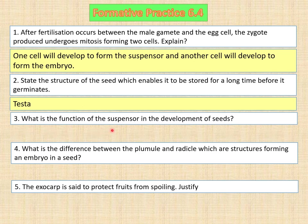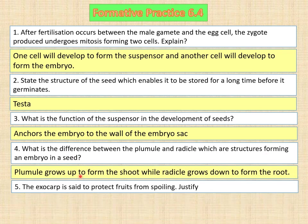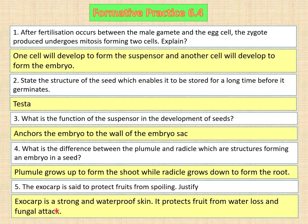Question three: What is the function of the suspensor in the development of seeds? The suspensor anchors the embryo to the wall of the embryo sac. Question four: What is the difference between the plumule and radicle, which are structures forming an embryo? The plumule grows upward to form the shoot while the radicle grows downward to form the roots. Last question: The exocarp is said to protect the fruit from spoiling — justify. The exocarp is a strong and waterproof skin, so it protects the fruit from water loss and fungal attacks.